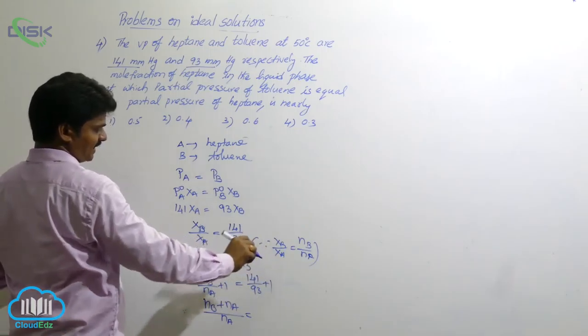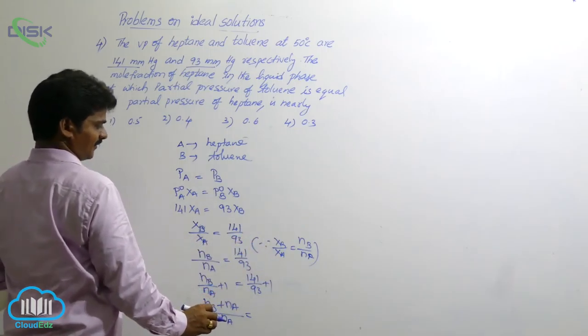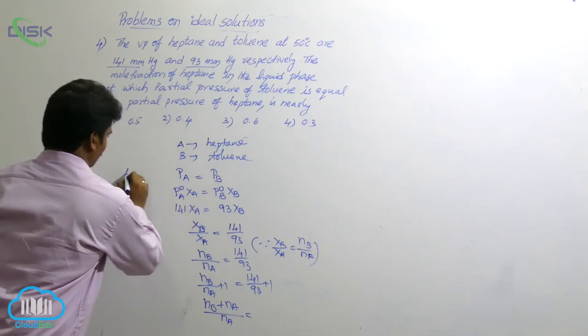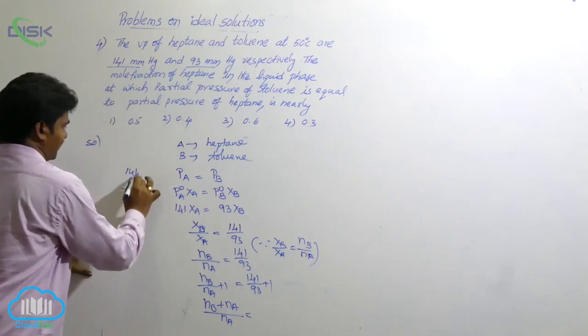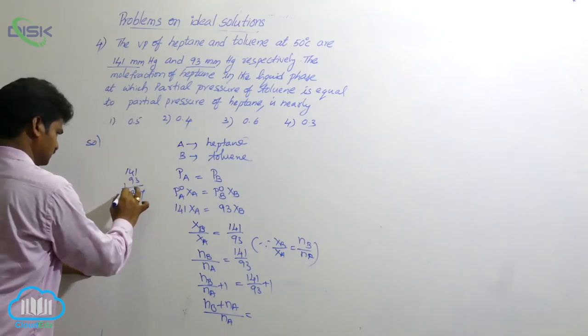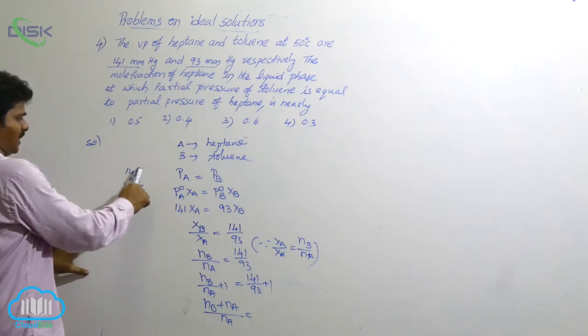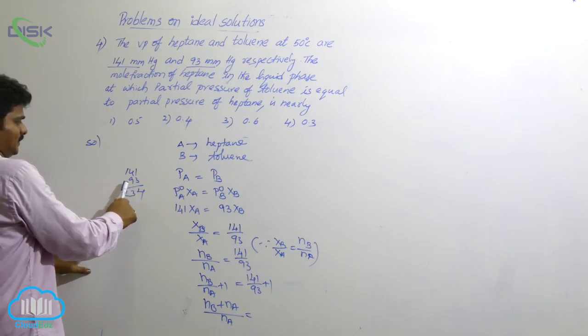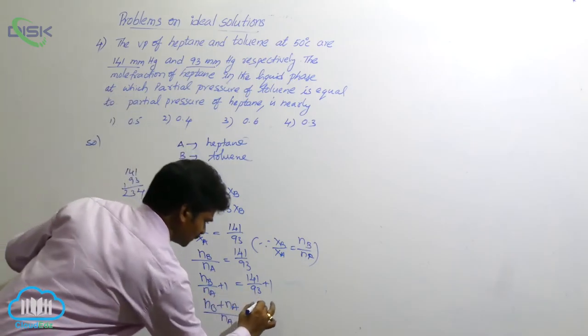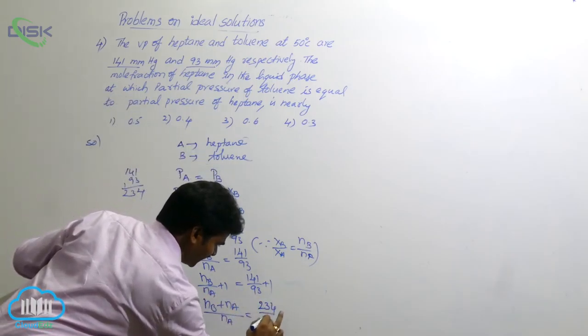So, let us say, 141 plus 93, what is the value? 141 plus 93 is value is 234. So, 1 plus 3 is 4, 9 plus 4, 30 plus 1, 234. So here, 234 by 93.